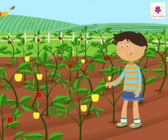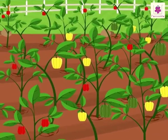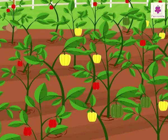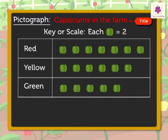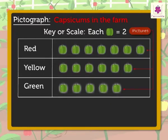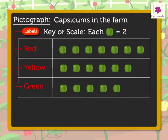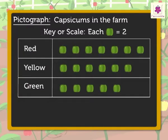Joy visited a farm which was full of red, yellow, and green capsicums. Now, let us read this PICTOGRAPH. Here, the title, Capsicums in the Farm, tells us the PICTOGRAPH is about the number of capsicums in the farm. The labels give us the information on the colours of the capsicums. The key, or scale, tells us that each capsicum picture is equal to two capsicums.